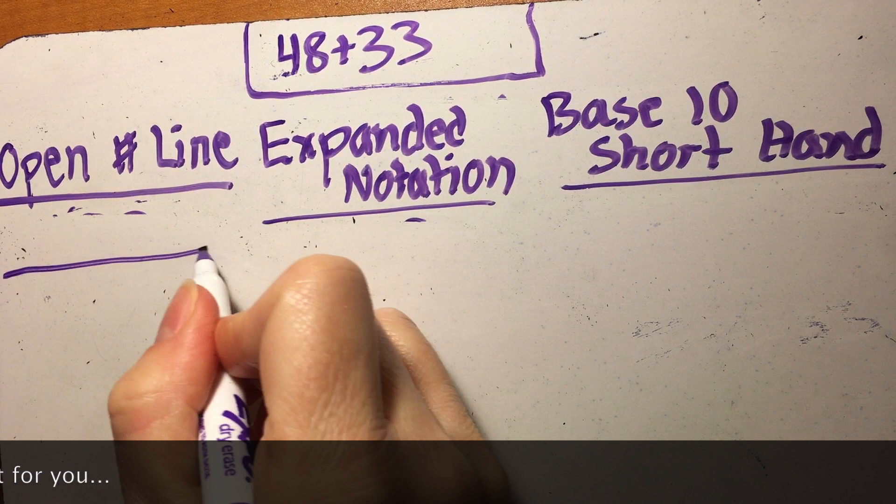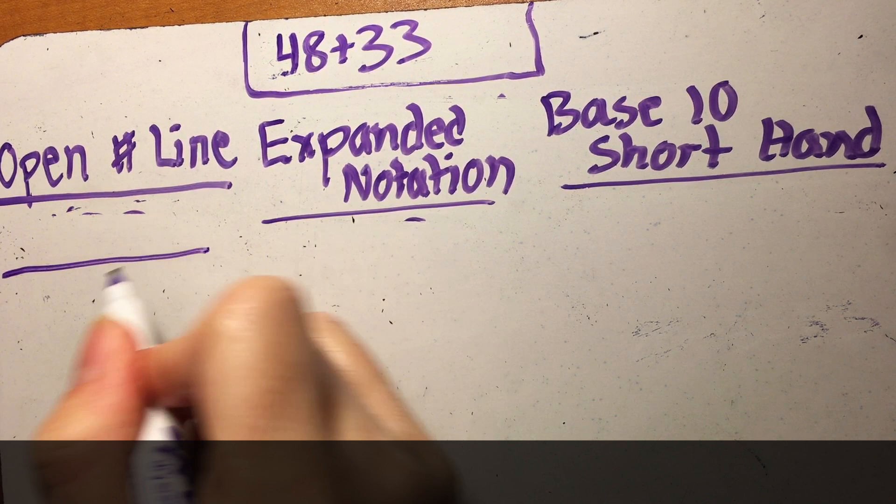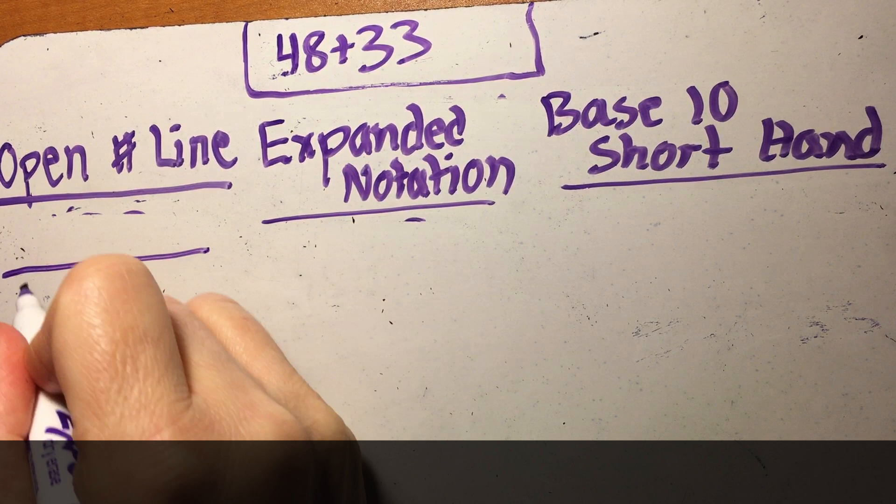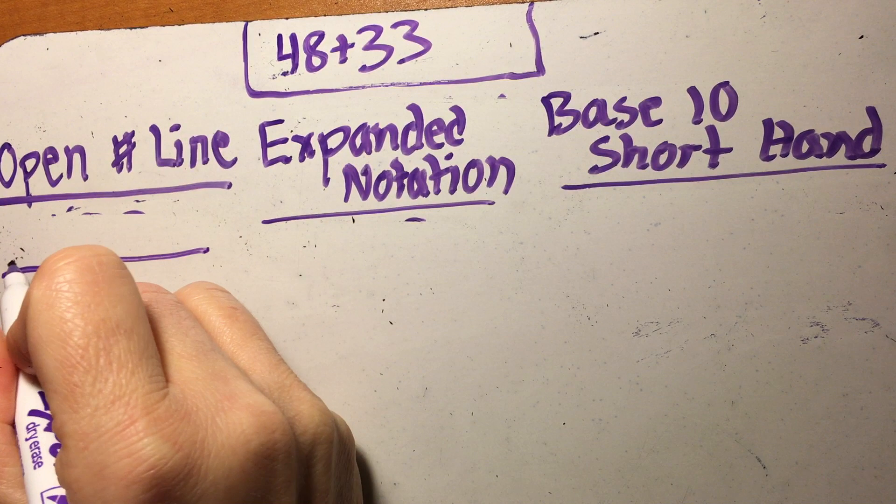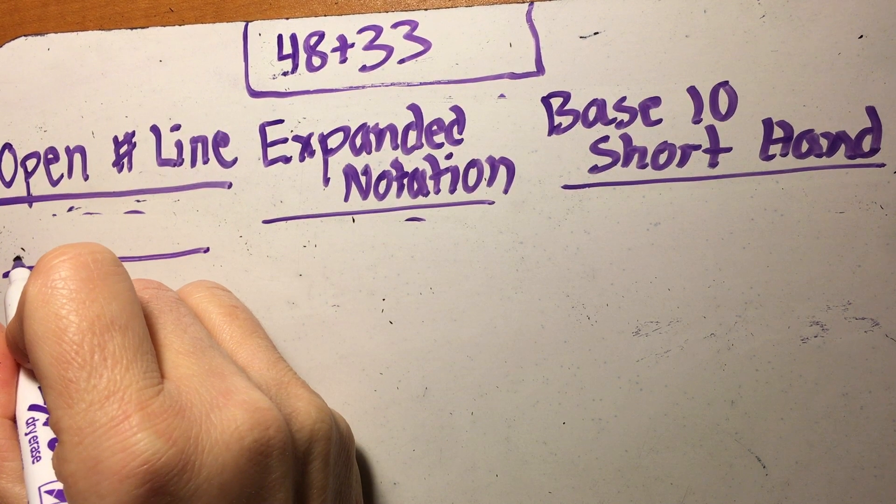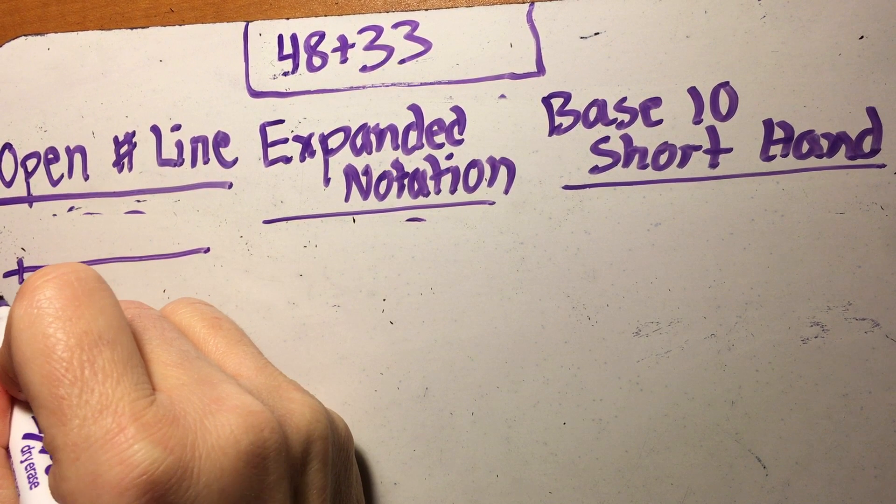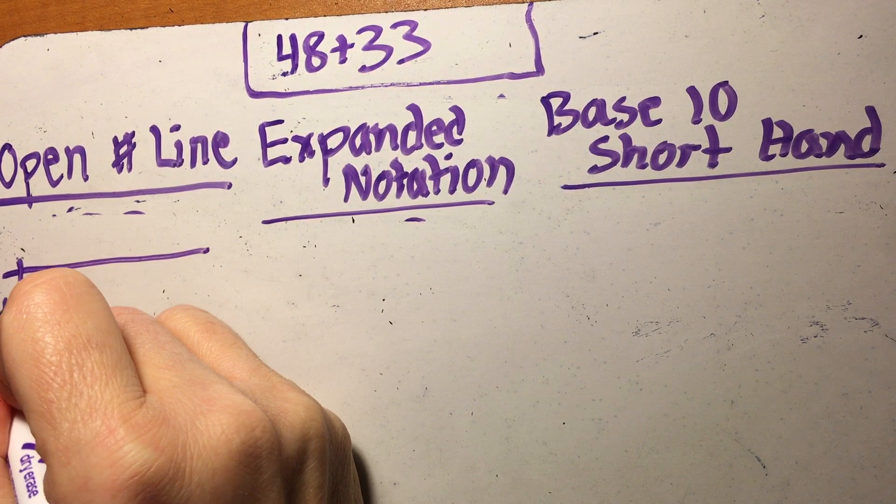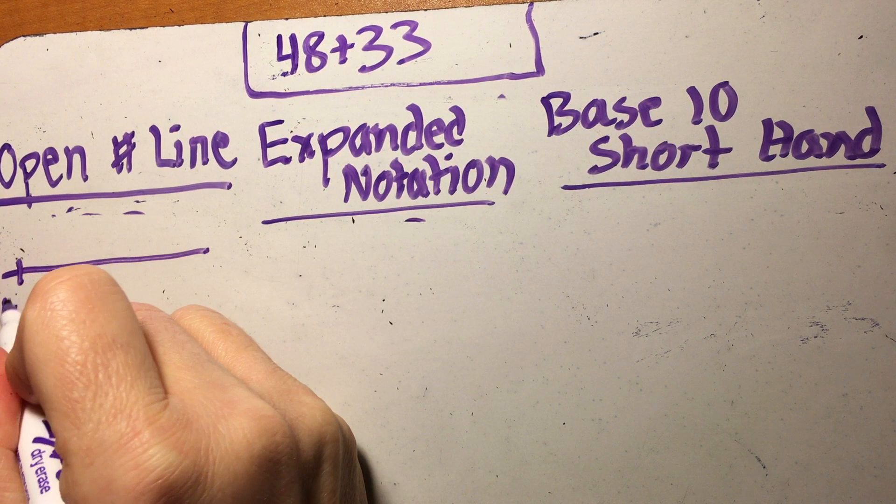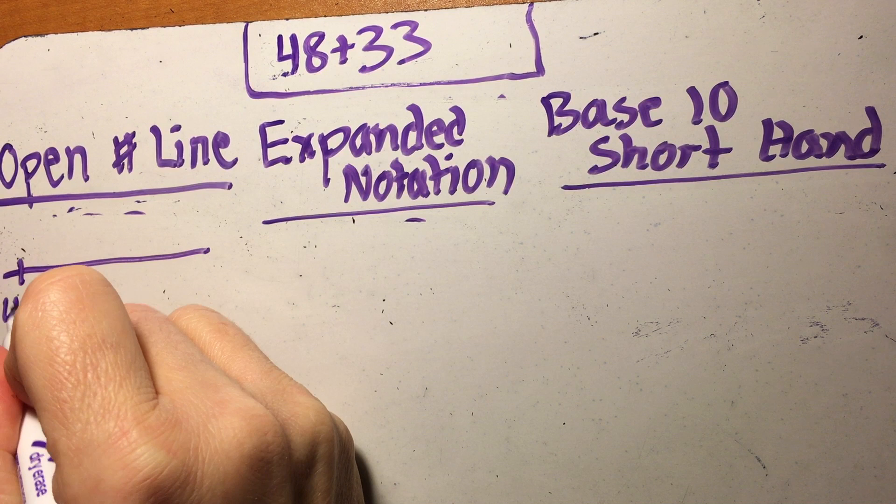An open number line, what your child will need to be able to do is count by tens starting with a different number, so like 48, 58, 68 and so on. We talked about how these are like turnaround facts. You can start either way but I'm going to start with 48 here. You can start with 33 if you wanted to and add 48 to it, or you could start with 48 and add 33 to it.